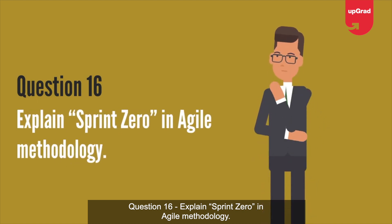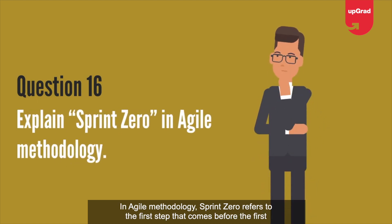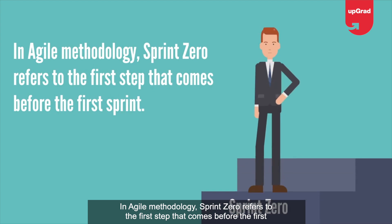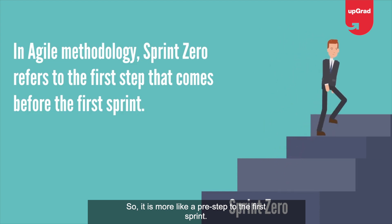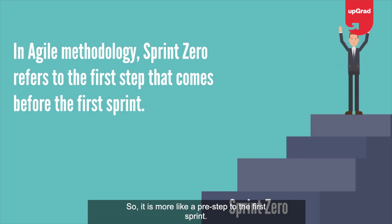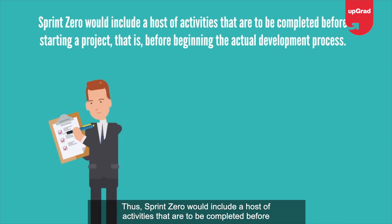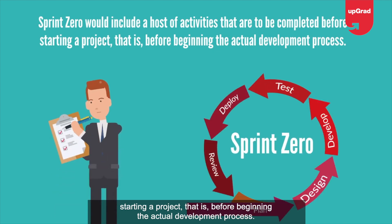Question 16: Explain Sprint Zero in Agile methodology. In Agile methodology, Sprint Zero refers to the first step that comes before the first Sprint — it is more like a pre-step to the first Sprint. Sprint Zero includes a host of activities that are completed before starting a project, that is, before beginning the actual development process.